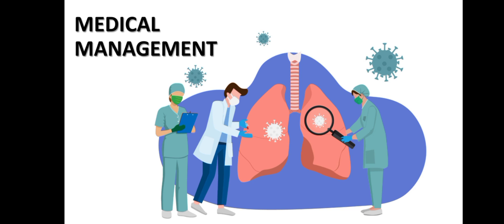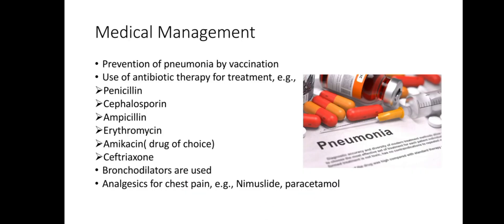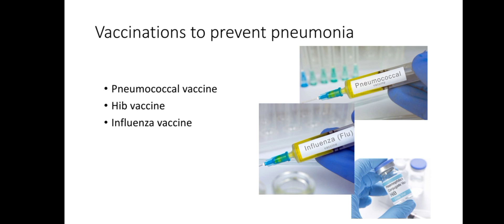Medical management includes prevention of pneumonia by vaccination, since prevention is better than cure. Antibiotic therapy is used for treatment — for example, penicillin, cephalosporin, ampicillin, azithromycin, amikacin, and ceftriaxone as the drug of choice. Bronchodilators are also used. Analgesics for chest pain include nimesulide and paracetamol. Vaccinations to prevent pneumonia include the pneumococcal vaccine, HIV vaccine, and influenza vaccine.